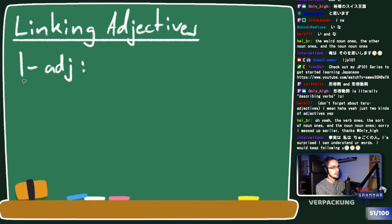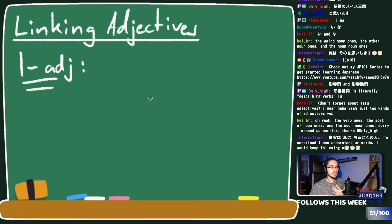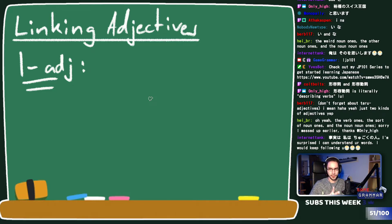I-adjectives have a te-form. If you watched lesson seven, you know te-form is a conjunctive form that verbs have - you can conjugate verbs into this so-called te-form and it's conjunctive, meaning it links things together. I-adjectives also have a te-form that works the very same way: it's a conjugation of the adjective using 'te,' and afterwards it becomes conjunctive so we can link another adjective afterwards - not a verb.